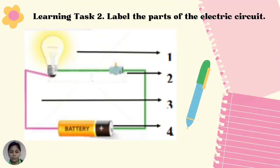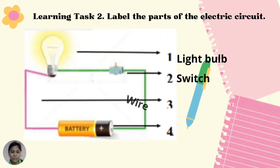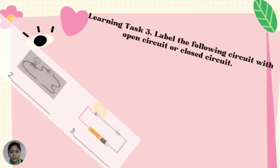For learning task number 2: Label the parts of the electric circuit. Number one, number two, number three, and number four. The correct answers are: number one, light bulb; two, switch; three, wire; and four, battery.